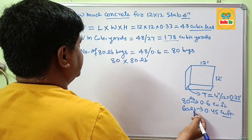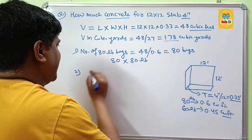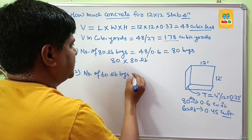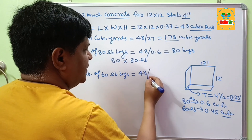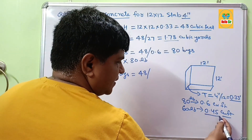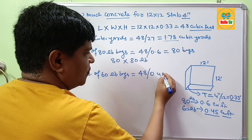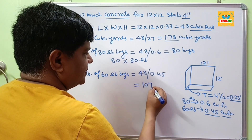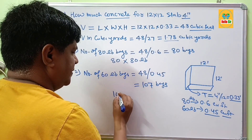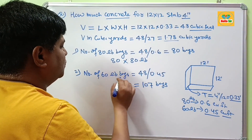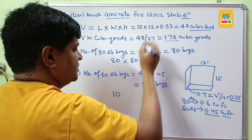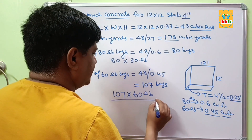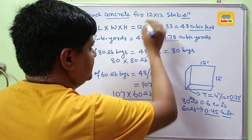Now calculate how many 60 LB concrete bags are required for this slab. The number of 60 LB bags equals the total amount in cubic feet — 48 — divided by the fill per bag, which is 0.45 cubic feet. This comes out to about 107 bags. So 107 sixty-pound bags are required to cover this slab.